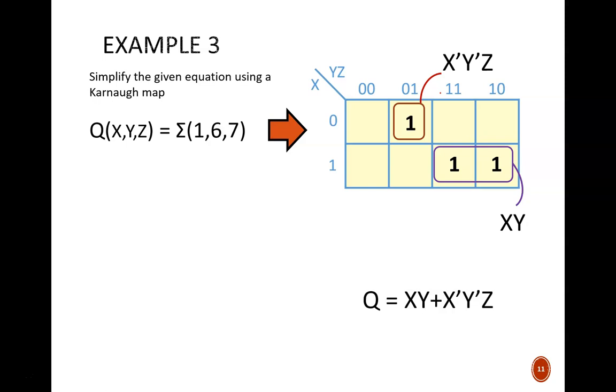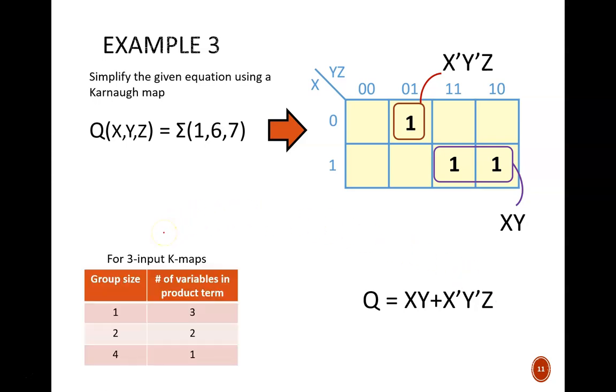This leads to a lengthier equation, but it is still accurate and as simple as possible. This table summarizes a key pattern that you may have noticed in these examples. The bigger the groups, the smaller the product terms, and thus the simpler the resulting equations. With a group size of 1, like we just saw in this example, all three of the input variables will be present. With a group size of 2, like in the bottom right on this map, then one of the inputs drops out, and the product term holds two variables. And with a group size of 4, like in the first example, then the product term is a super simple one variable.